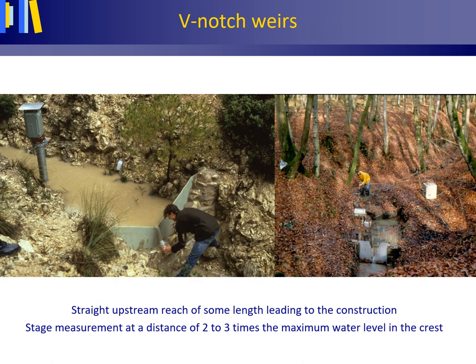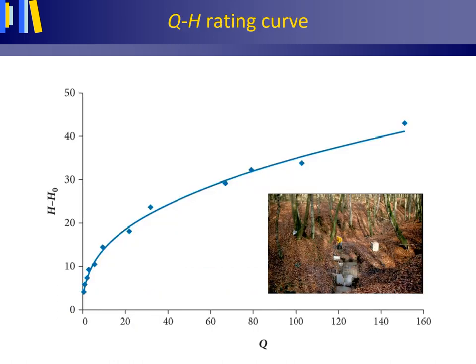Man-made fixed constructions in the riverbed, such as weirs and flumes, need to comply with a number of conditions, such as a straight upstream reach of some length leading to the construction. Also, the measurement of the stage must be carried out at a distance of two to three times the maximum water level in the crest, to avoid the effects of drawdown from water flowing over the crest. Often, in reality, prescribed conditions are not fully met, and because of this, Q-h relations in practice — so-called Q-h rating curves — may differ from theoretically derived equations.